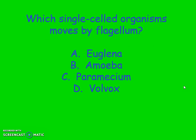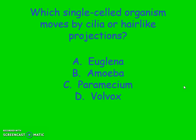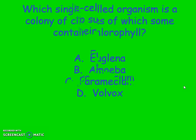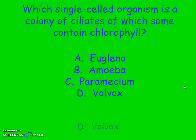Let's have a quiz to see how much you remember. Which single-celled organism moves by flagellum? If you said euglena, you are correct. Which single-celled organism moves by cilia or hair-like projections? If you said the paramecium, you are correct. Which single-celled organism uses pseudopods to surround and engulf their food? If you said the amoeba — the blob — you are correct. Which single-celled organism is a colony of cells of which some contain chlorophyll? If you said volvox, you are correct.